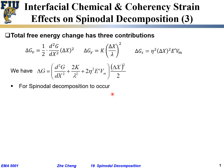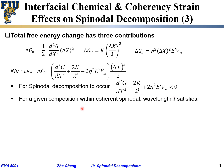In order for spontaneous spinodal decomposition to occur, the three-term summation within the bracket has to be smaller than zero. For a given composition within the coherent spinodal, we have to consider the geometric term. Rearranging this relationship, we keep the 2K over lambda squared on the left, so this term has to be smaller than the negative of the other two terms added together. The 2K divided by lambda squared term has to be smaller than the negative of the second derivative term plus the geometric term.